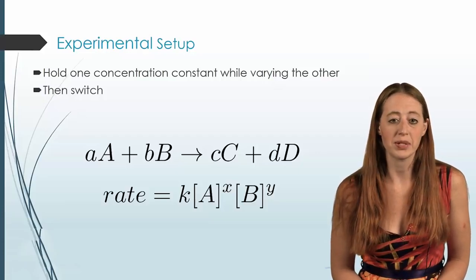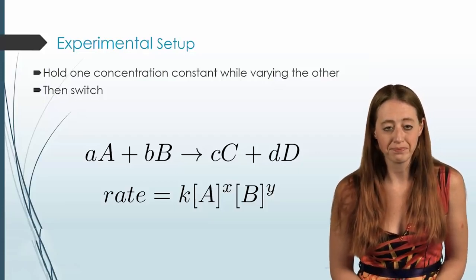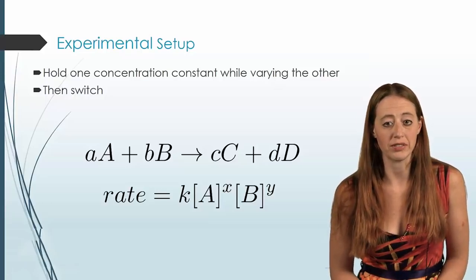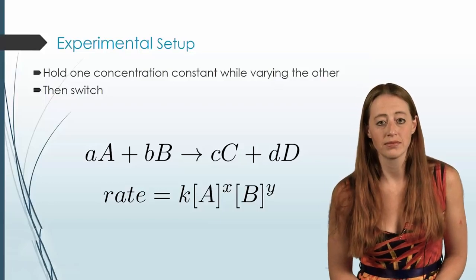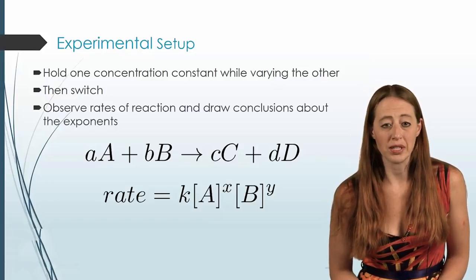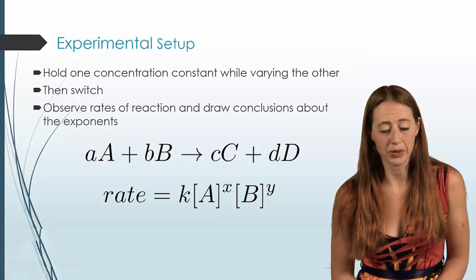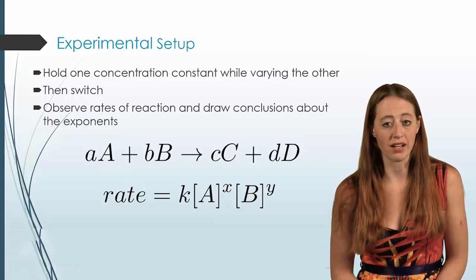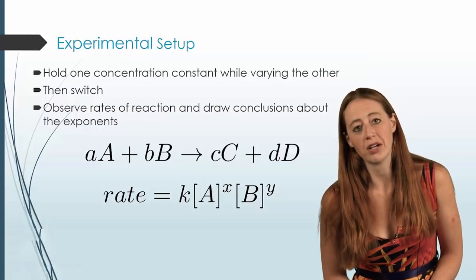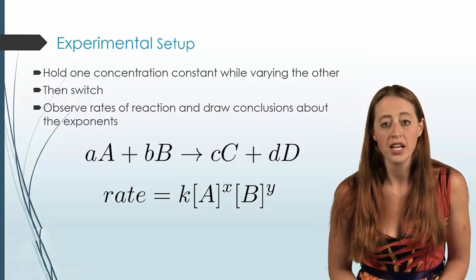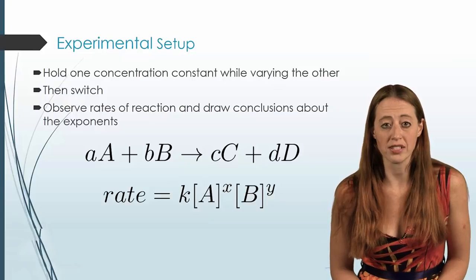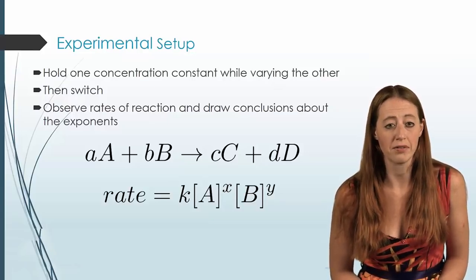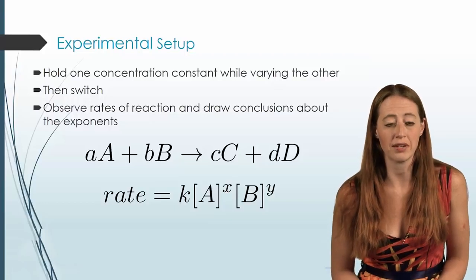And then once we do that, we switch. And once we switch, we can get the opposite. And we can do this with as many reactants as we have in order to solve for each one individually. Now, once you do this and you collect all the data, you can look at the problem and you can decide what is the exponent on each of these rate laws. And we've so far only been talking about them in terms of whole numbers, but they could also be partial, or they could be fractions. And things like that will occur, and you can calculate them. And you'll have two examples in this video, and then you'll have several hundred examples.